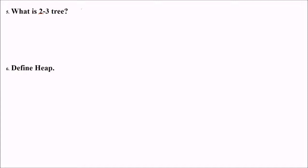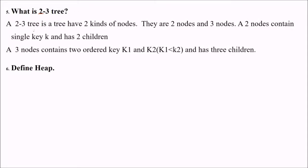What is 2-3 tree? A 2-3 tree is a tree that has two kinds of nodes: 2 nodes and 3 nodes. A two node contains a single key and has two children. A three node contains two ordered keys K1 and K2 where K1 is less than K2 and it has three children.